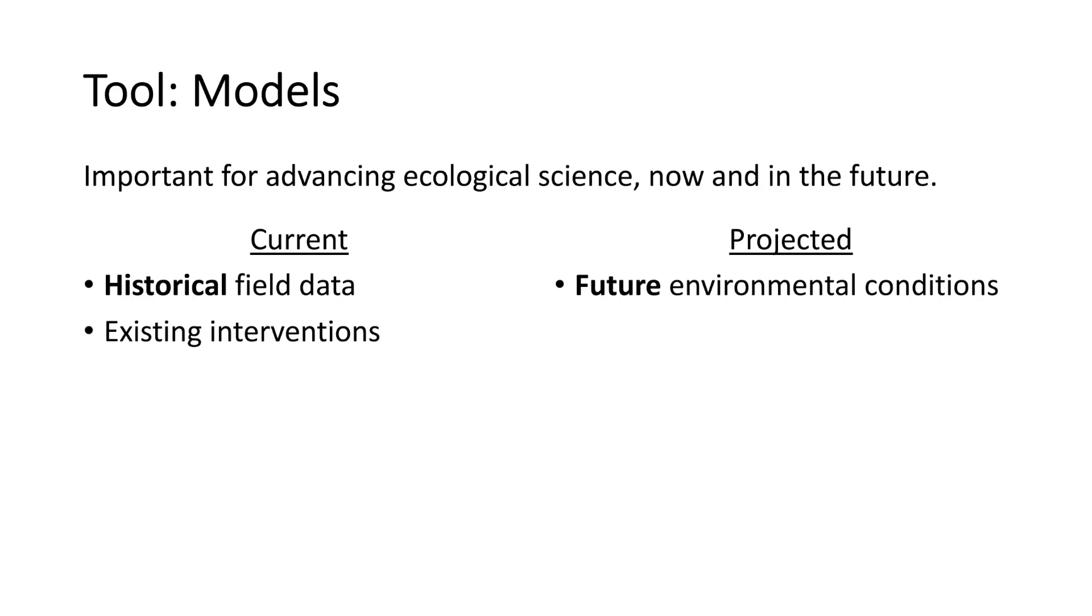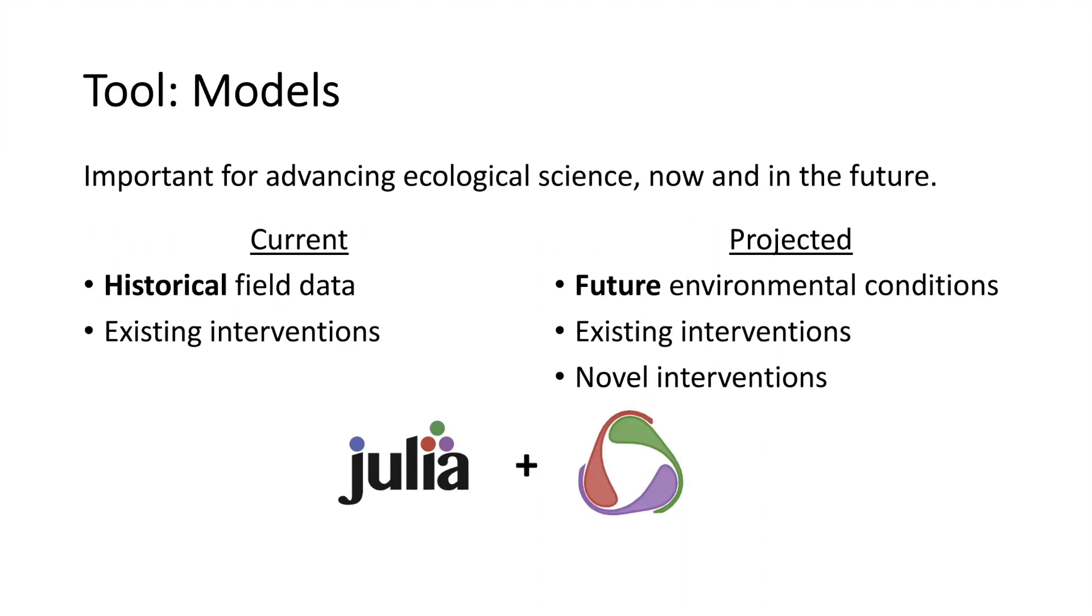This includes testing the potential effectiveness of old interventions like insecticides under new environmental scenarios like increasing temperatures. But it also extends to testing new potential interventions that are not yet ready to be experimented with in the wild, like genetic modification technologies. The Julia language together with platforms like DifferentialEquations.jl is a particularly agile tool for conducting model-based research in these areas.